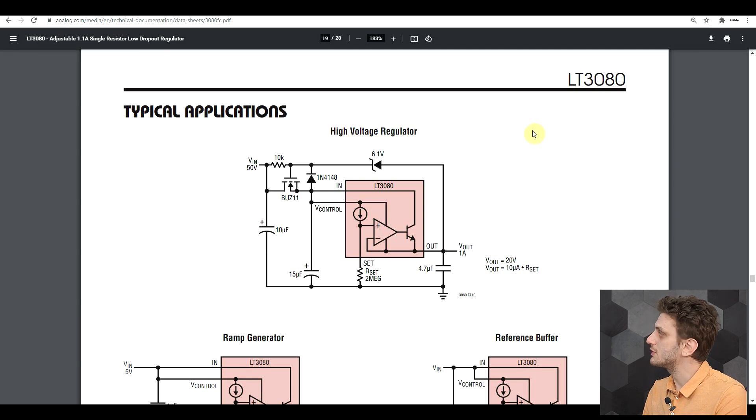Another thing that was missing can be observed in the datasheet of the LT3080, it's a component quite similar to the LM317, and here they also made a high voltage regulator, but this time with a field effect transistor. And here they added a diode between the source and the gate. So here it's a normal diode, but this can also be a zener diode to prevent excess voltage building up between the gate and the source.